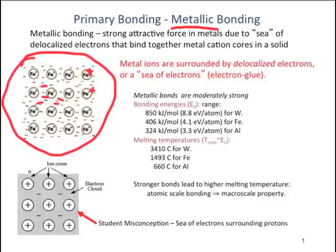The electrons are free to move because they do not stay attached to any one metal core, but they act like a glue to keep the metal together. A common misconception is that only protons float in the electron sea. However, it is positively charged metal cores, or metal cations, that are in the electron sea — for example, iron plus. Metallic bonds in general are less strong than ionic or covalent bonds, but are stronger than secondary van der Waals bonds.